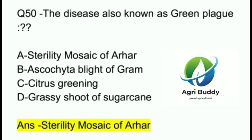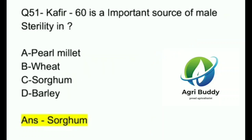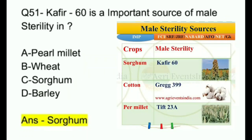Question 50. The disease also known as Green plague is? A. Sterility mosaic of arhar. B. Ascochyta blight of gram. C. Citrus greening. D. Grassy shoot of sugarcane. And the answer is Sterility mosaic of arhar.